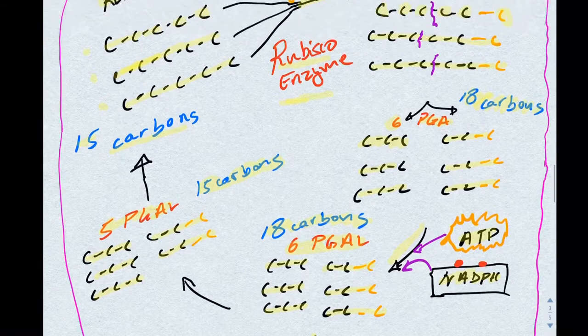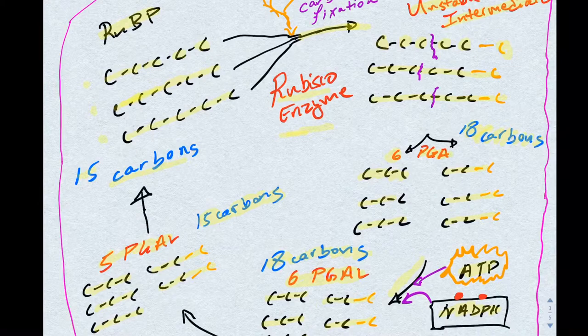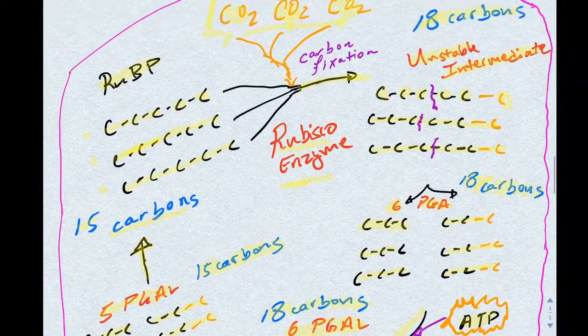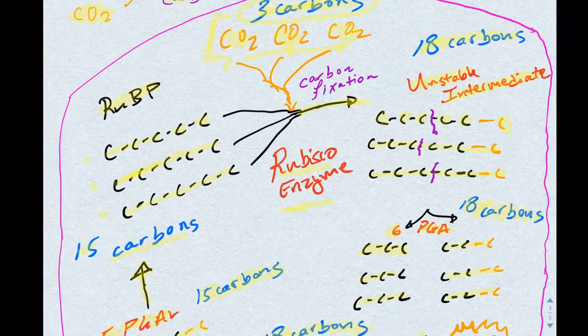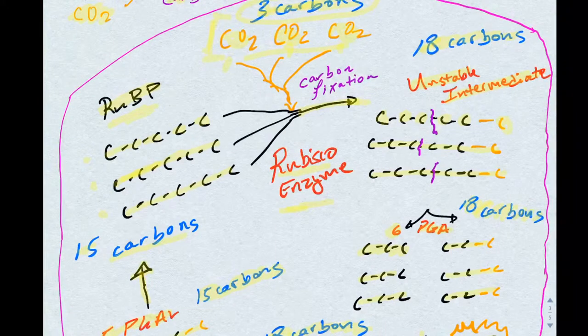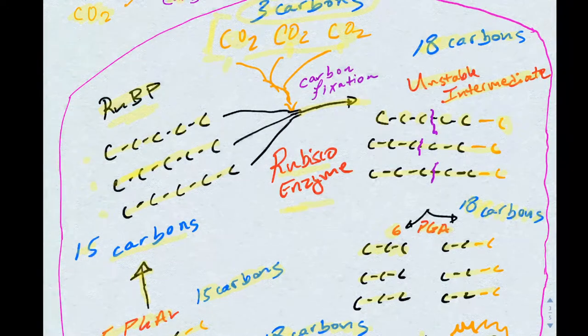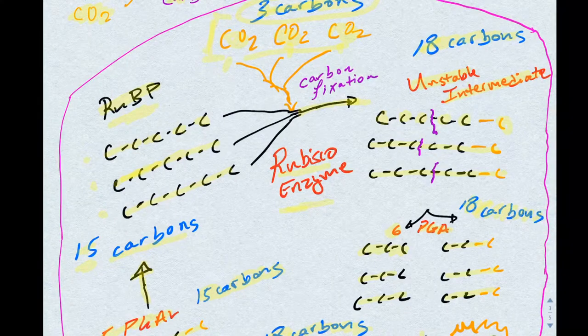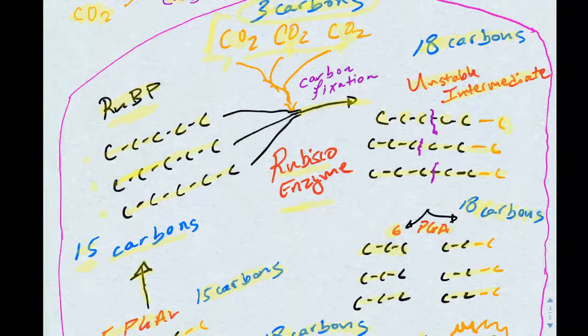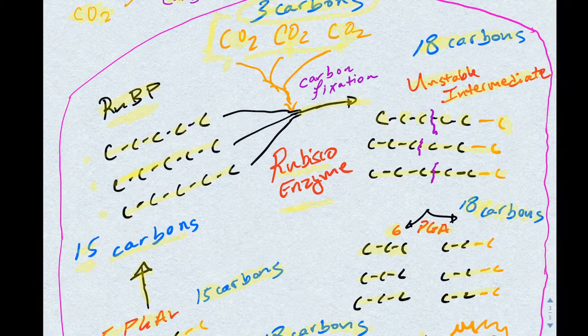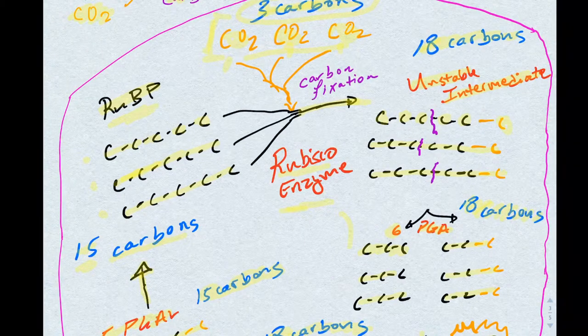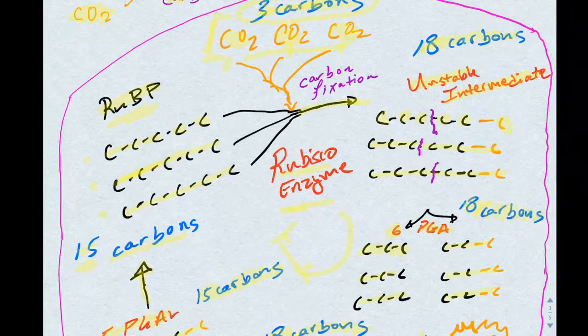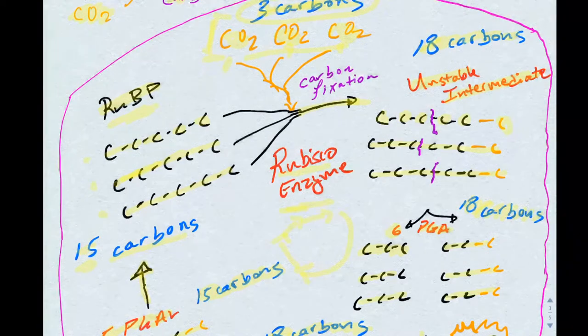The next step reshuffles these five PGALs into the molecule we started with, which was RU-BP. And this is precisely why we have 15 carbons at the beginning of the carbon reactions. It is because this process can continue as a cycle and regenerate its starting material.